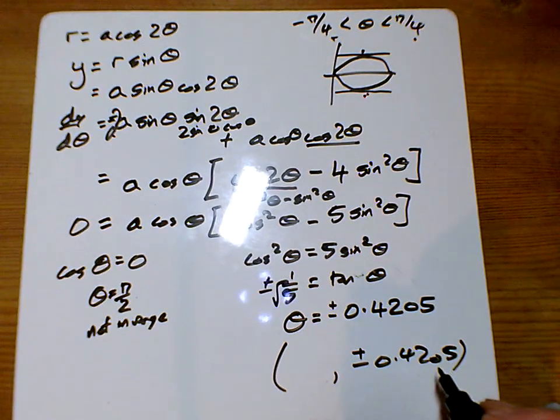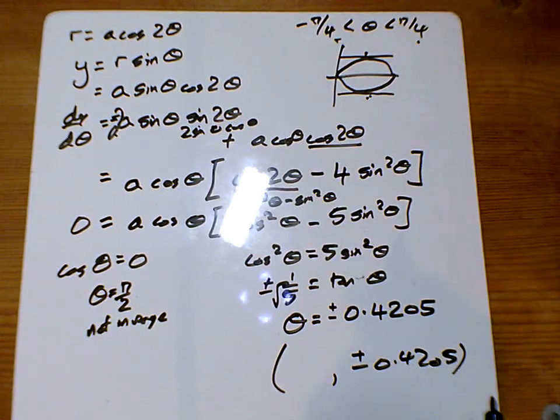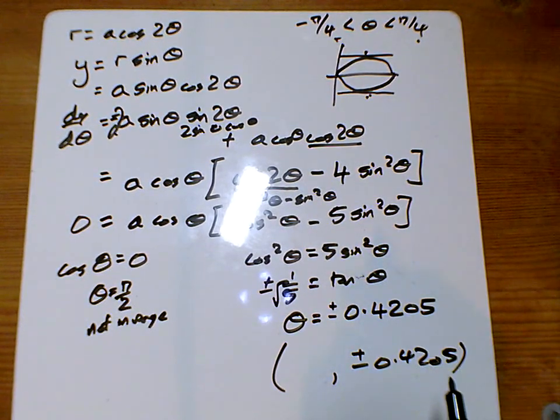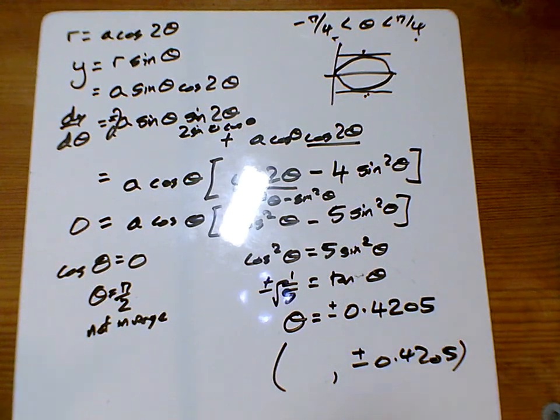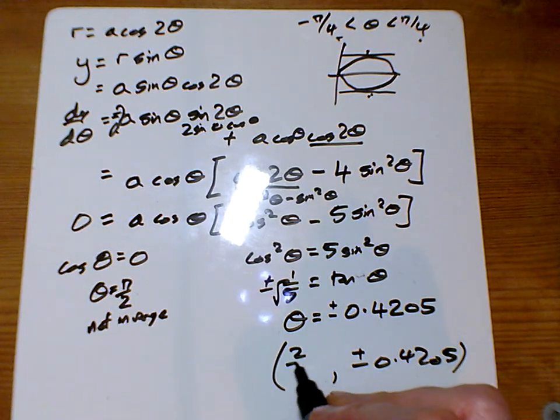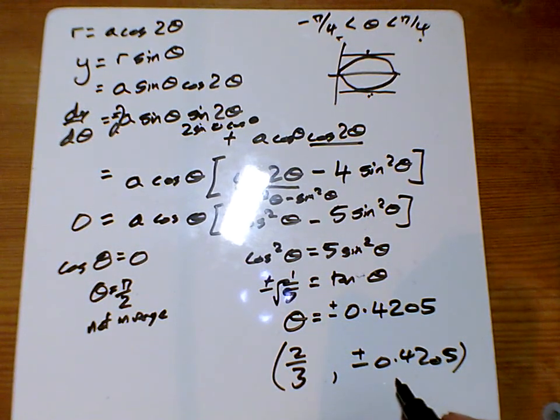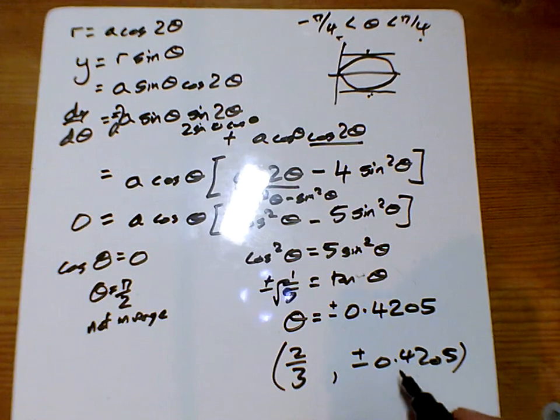And if we stick that back in up there. So the cos of 2 times answer is... A little stress there at the end of a five minute video that the calculator didn't give the right answer. But it's given me it now. So it's two thirds. So I've just done the cos of 2 times that.